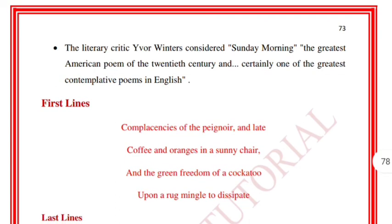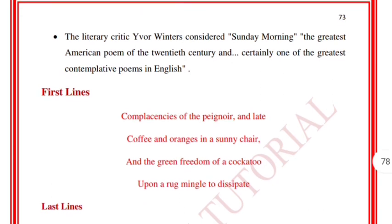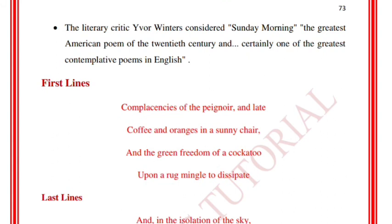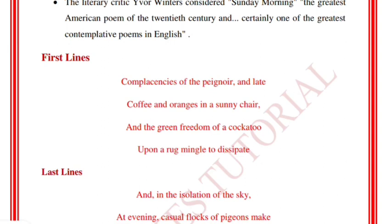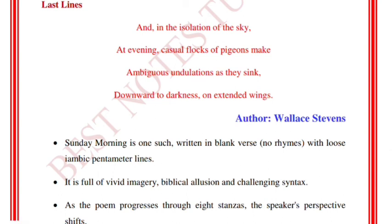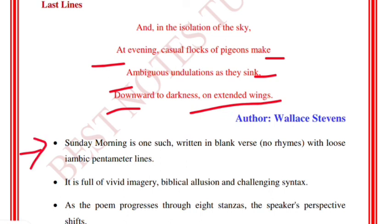The literary critic Yvor Winters considers Sunday Morning the greatest American poem of the 20th century and certainly one of the greatest contemplative poems in English. The first lines are: 'Complacencies of the peignoir, and late / Coffee and oranges in a sunny chair / And the green freedom of a cockatoo / Upon a rug mingle to dissipate / And in isolation of the sky / At evening, casual flocks of pigeons / Make ambiguous undulations as they sink / Downward to darkness, on extended wings.'